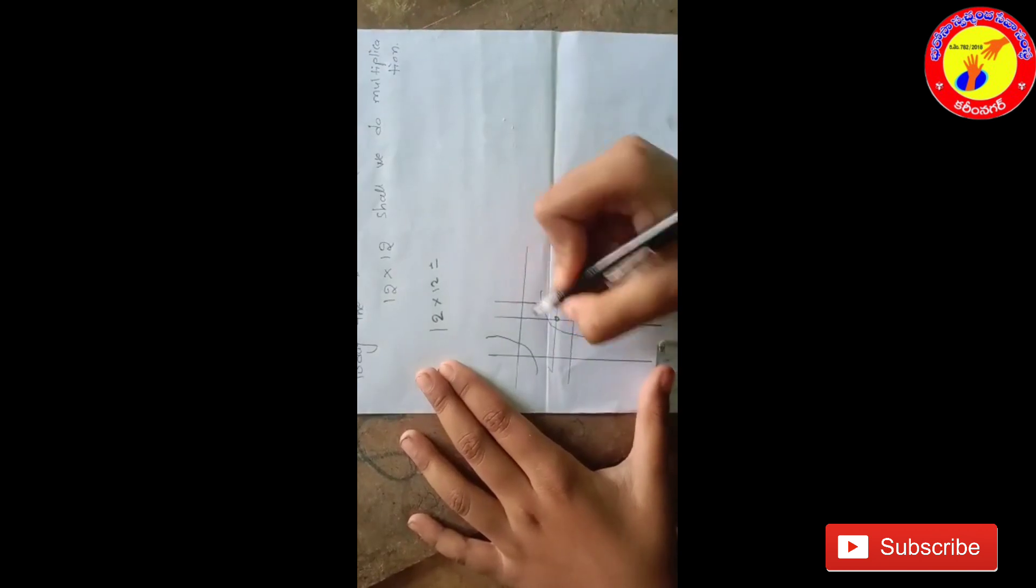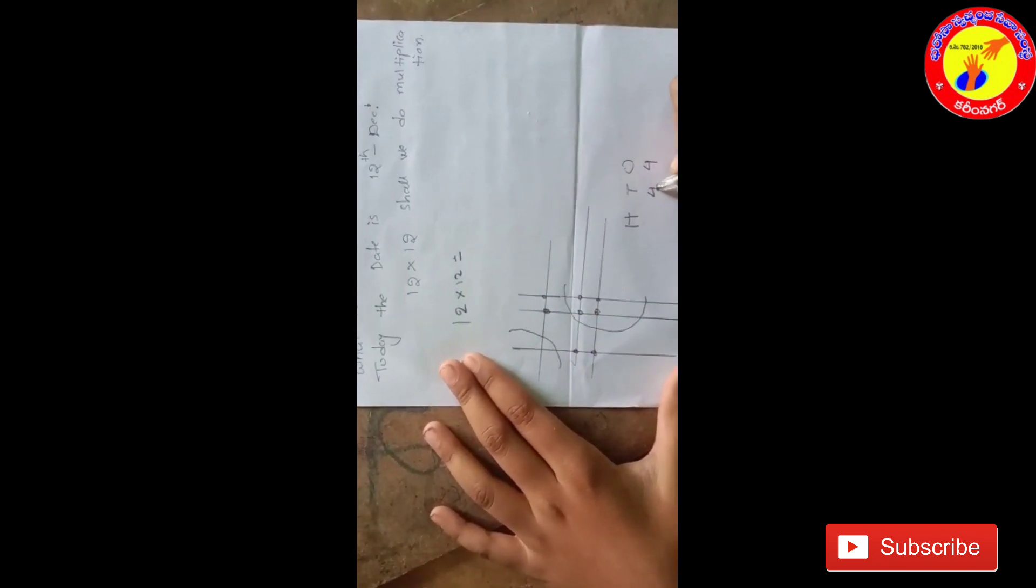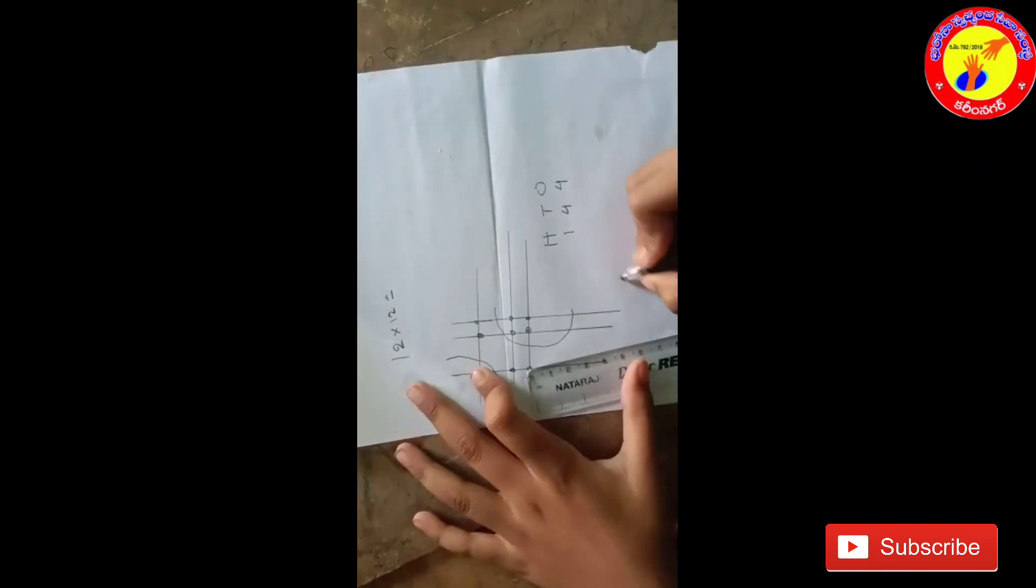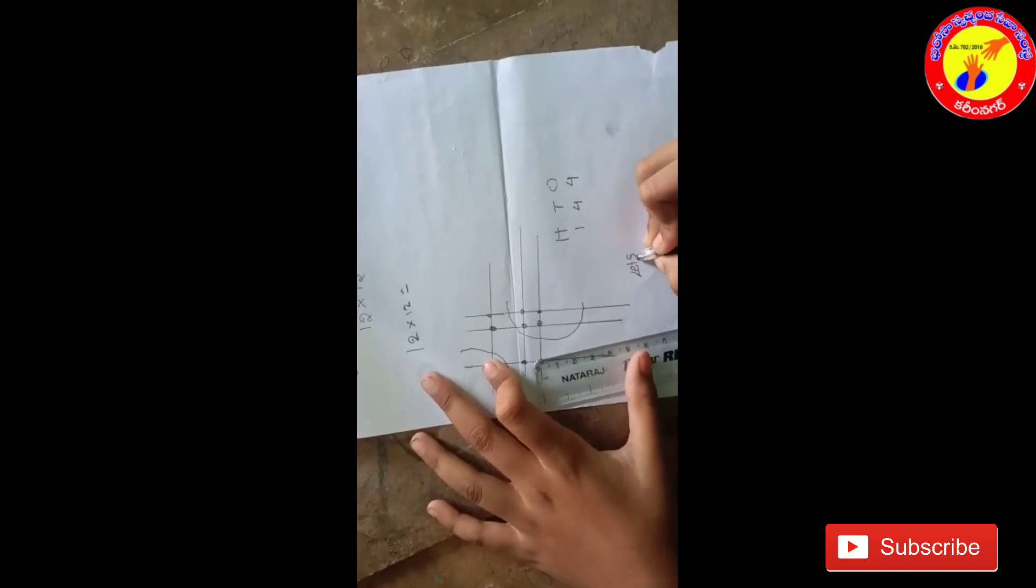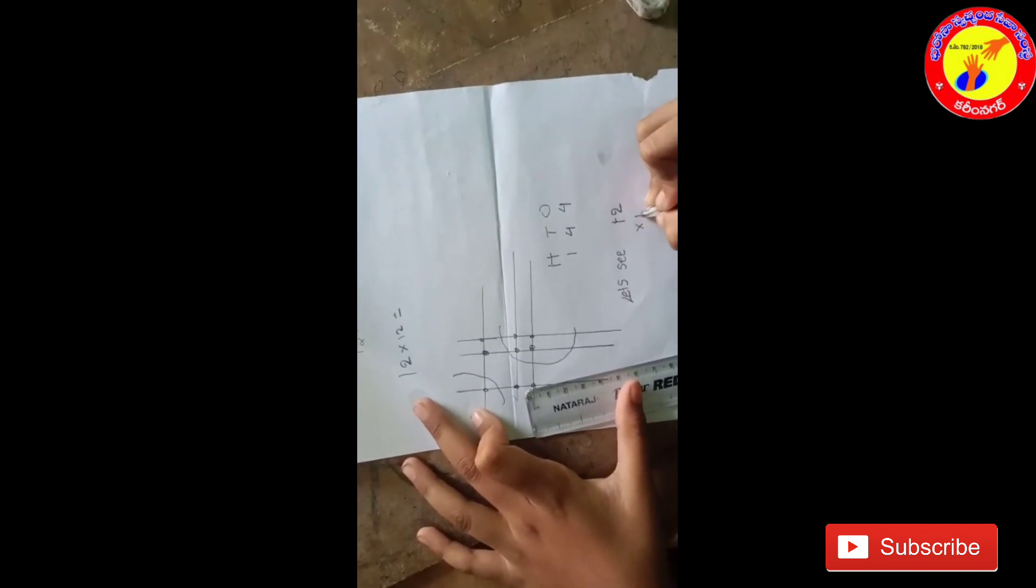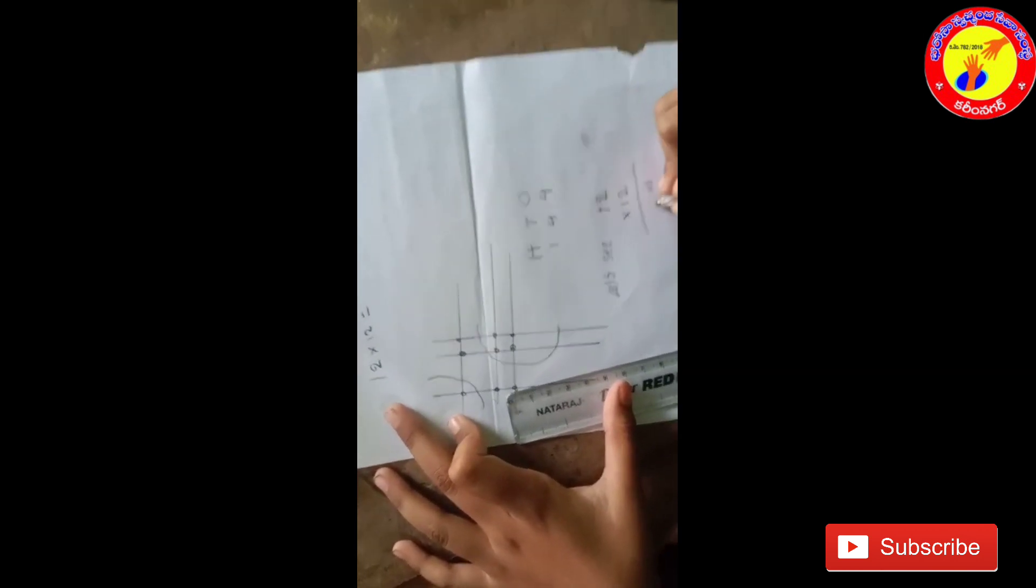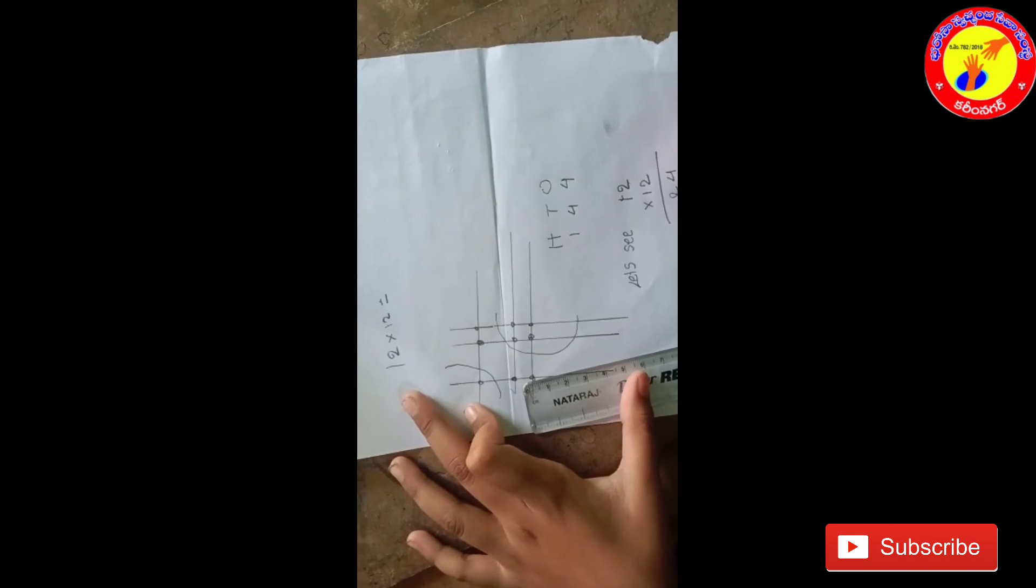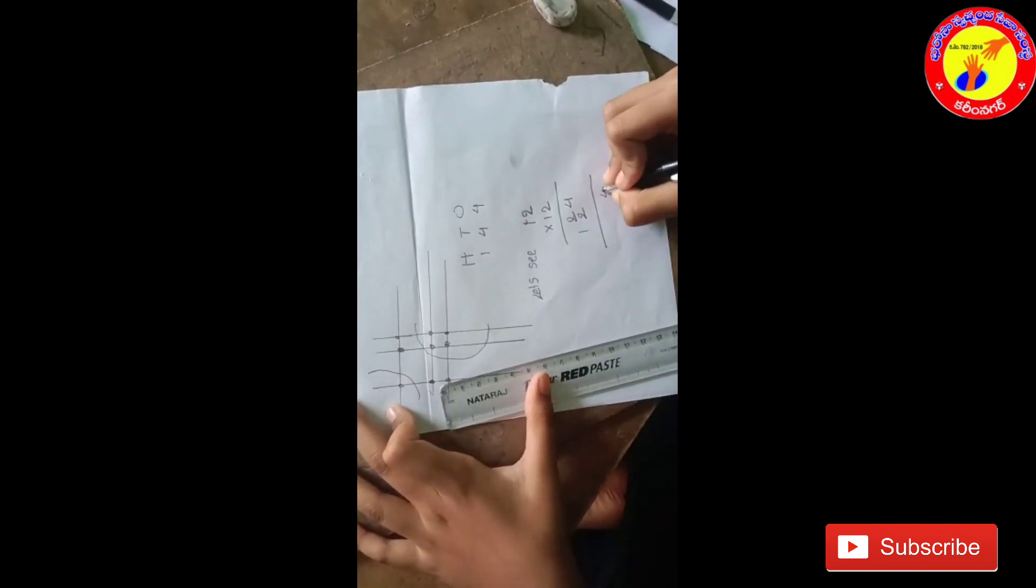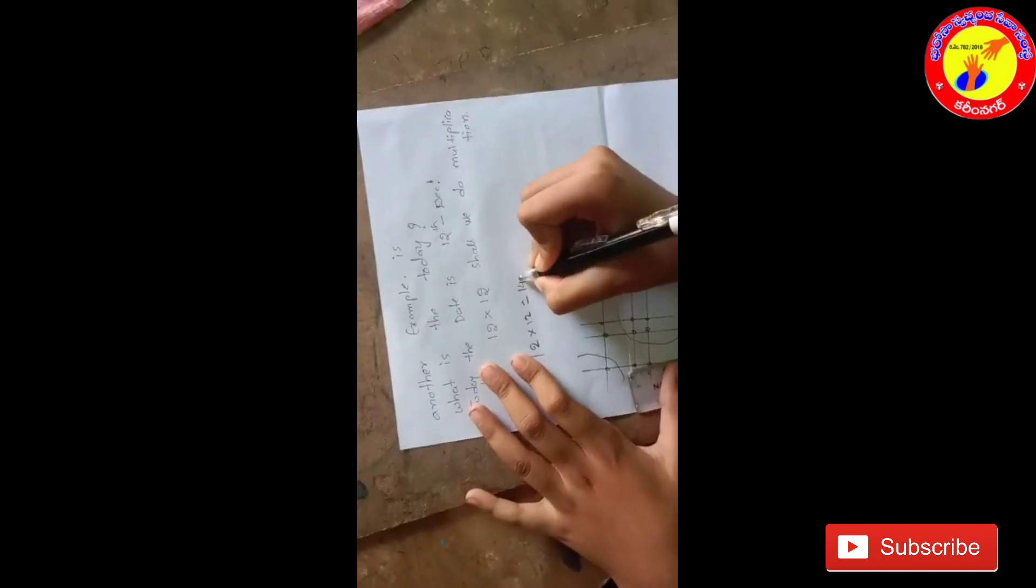We have to write 4. Count hundreds: 1. It is 144. Let's verify: 12 into 12, 2 times 2 is 4, 2 times 1 is 2, 1 times 2 is 2, 1 times 1 is 1. The answer is 144.